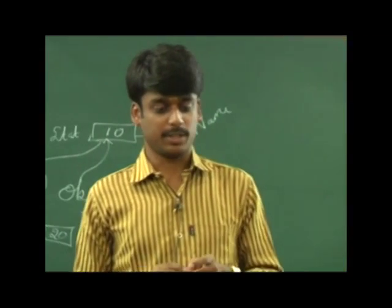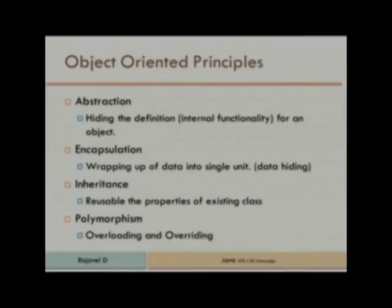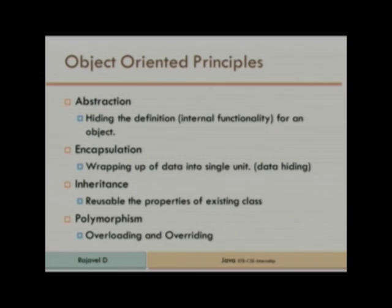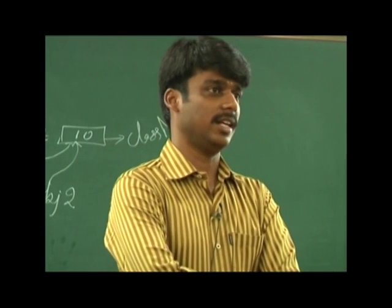Now, object-oriented principles. In object-oriented programming we discuss four things: abstraction, encapsulation, inheritance, and polymorphism. What is abstraction? Hiding the definitions — hiding the internal functionality of an object. It means not giving the definition for a method. That is abstract.